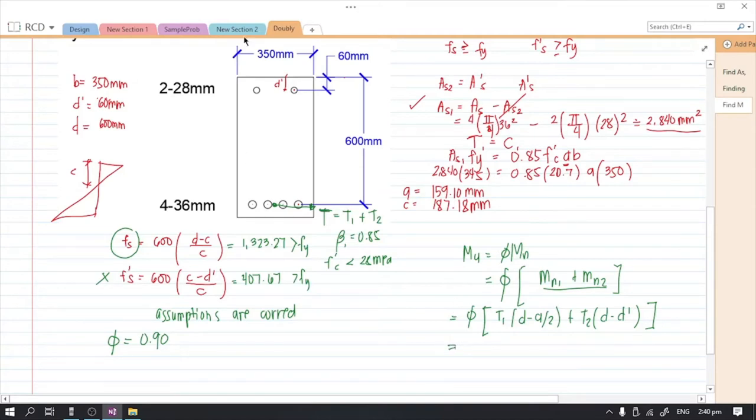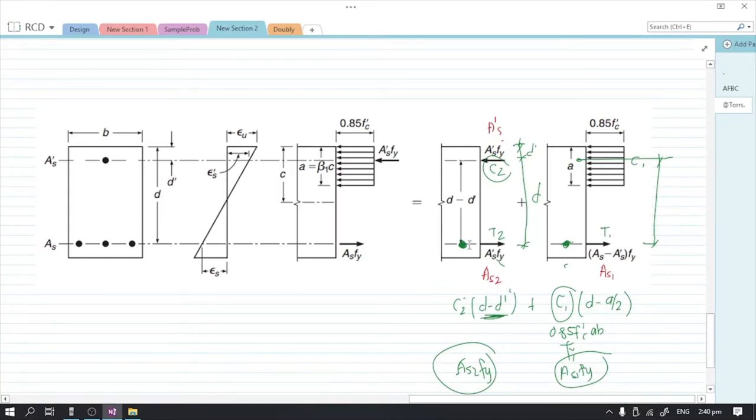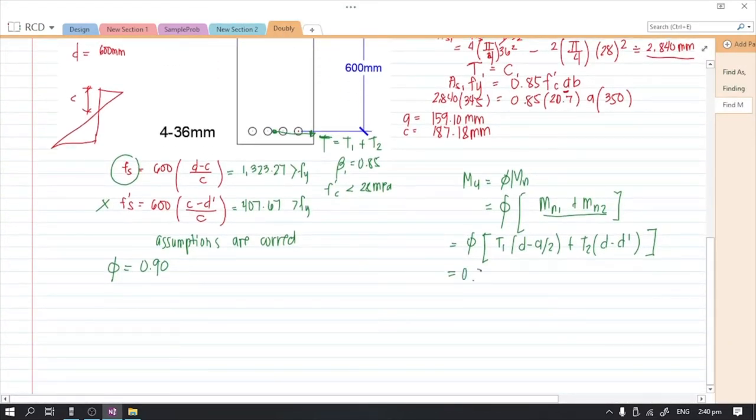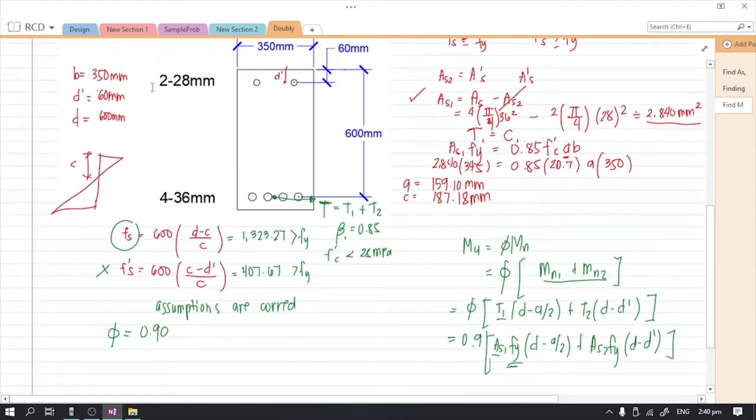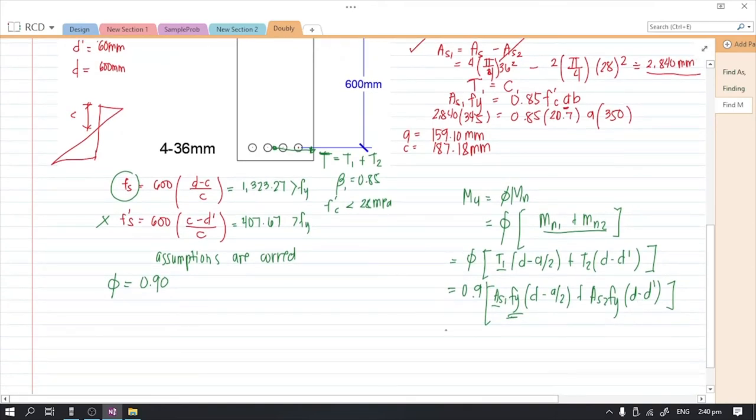So you might think, we took moments at the location of the tension forces, shouldn't they be zero? Your thinking should be: we took moments here but we used the equivalent force instead of C2. So substitute: we have 0.9, and then T1 is As1 fy, we will use fy since they both yielded, and then As2 fy d minus d prime. So As1 we already have a value of 2,840 mm² and As2 is from two 28 mm bars. When you substitute these values, you should get 665.43 kN·m for the ultimate moment.